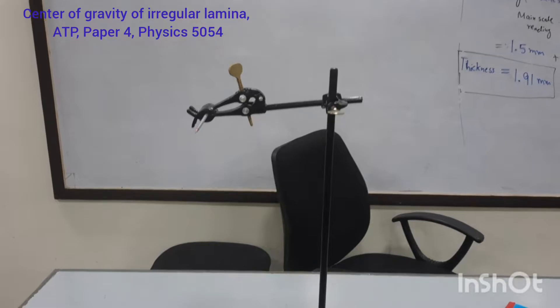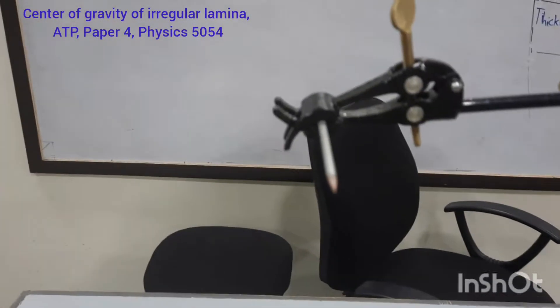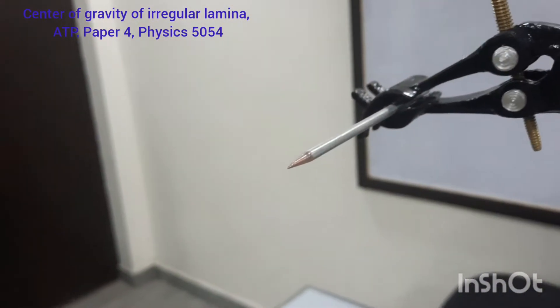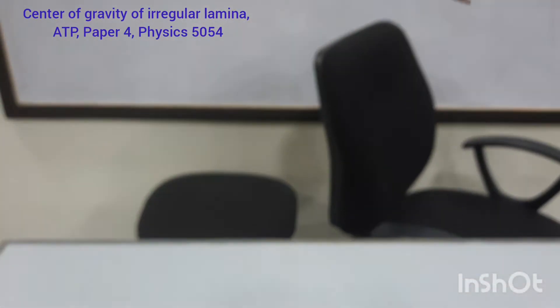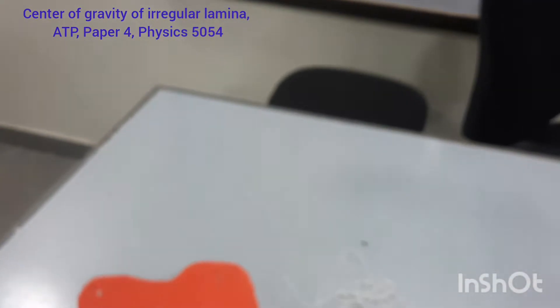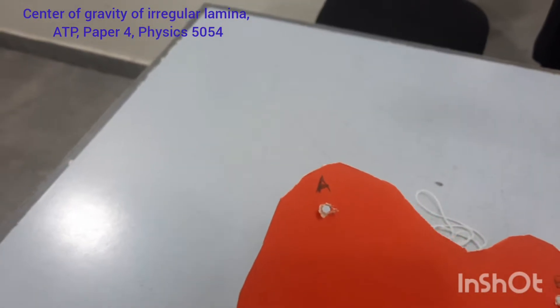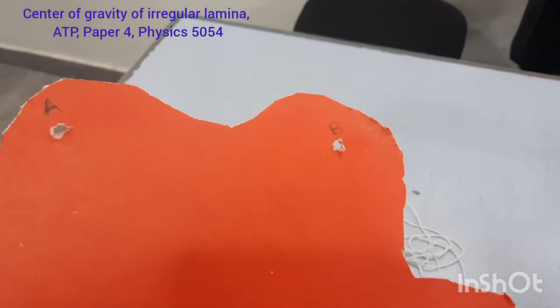So this stand is retort stand. In the clamp of the retort stand we have put a needle. We have in our lab this needle. With this needle I will hang this lamina. So for this purpose what we have done, we have made holes on the edges of this irregularly shaped lamina.